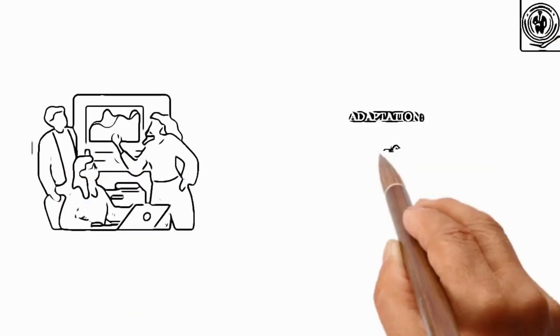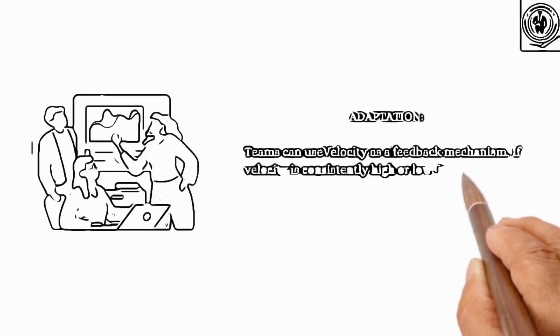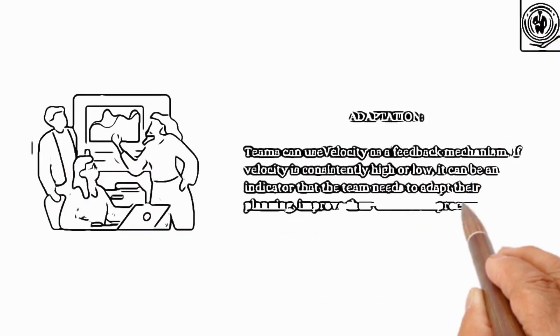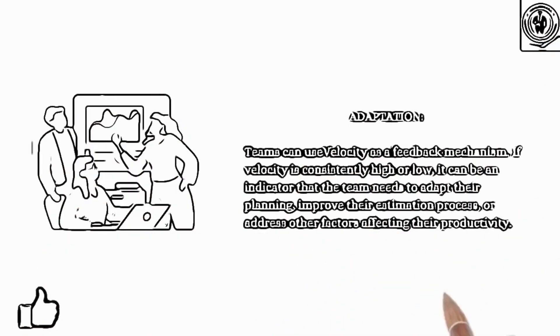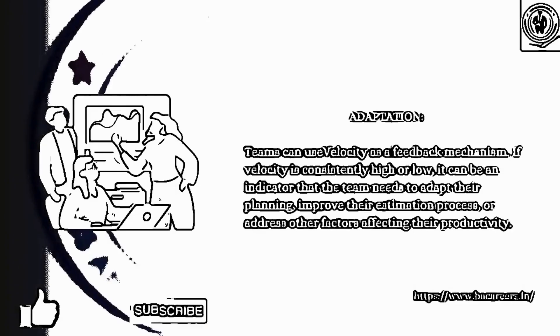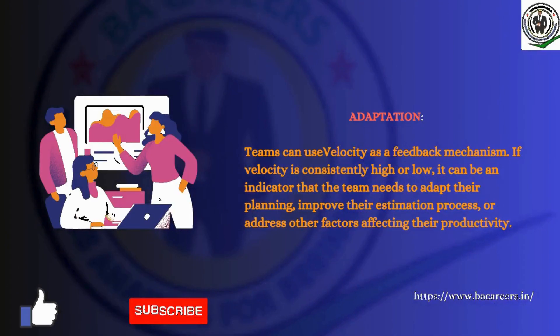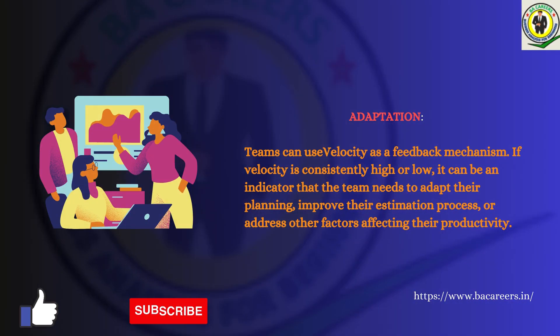Adaptation: Teams can use Velocity as a feedback mechanism. If Velocity is consistently high or low, it can be an indicator that the team needs to adapt their planning, improve their estimation process, or address other factors affecting their productivity.